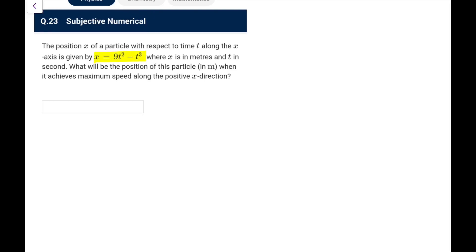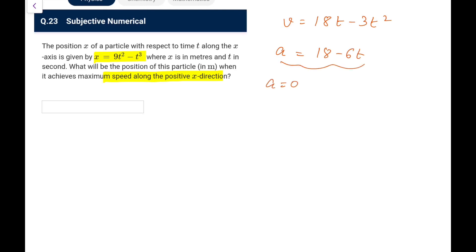Numerical Q23: position x = 9t² − t³ meters. Velocity v = 18t − 3t². Maximum speed when acceleration = 0: dv/dt = 18 − 6t = 0, so t = 3 s. Position at t = 3: x = 9(9) − (27) = 81 − 27 = 54 meters.